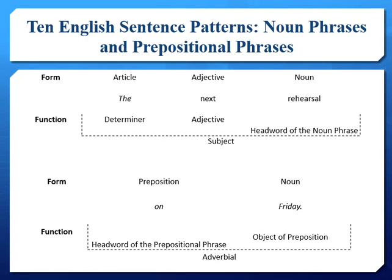Describing the form of words, phrases, and clauses is done with the parts of speech, such as articles, adjectives, adverbs, pronouns, verbs, be verbs, linking verbs, and prepositions. Whereas describing function in a sentence usually consists of terms such as subject, object, adjectivals, adverbials, transitive and intransitive verbs, be verbs, linking verbs, and prepositions. Notice that terms such as be verbs and linking verbs can be used to describe both form and function.